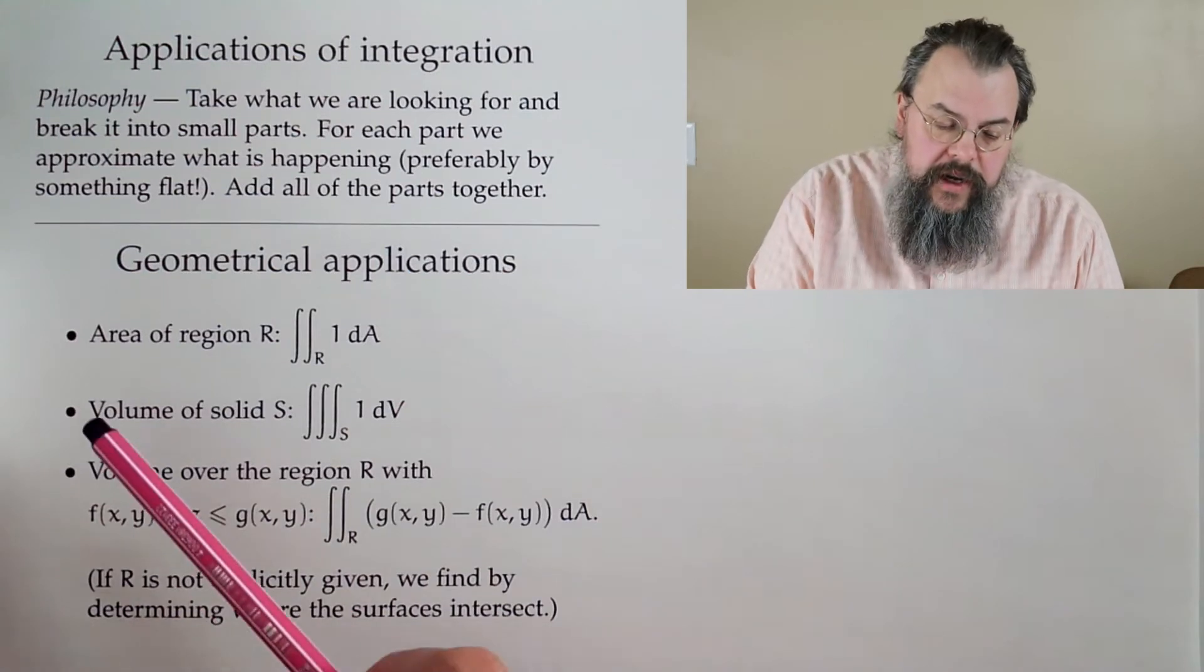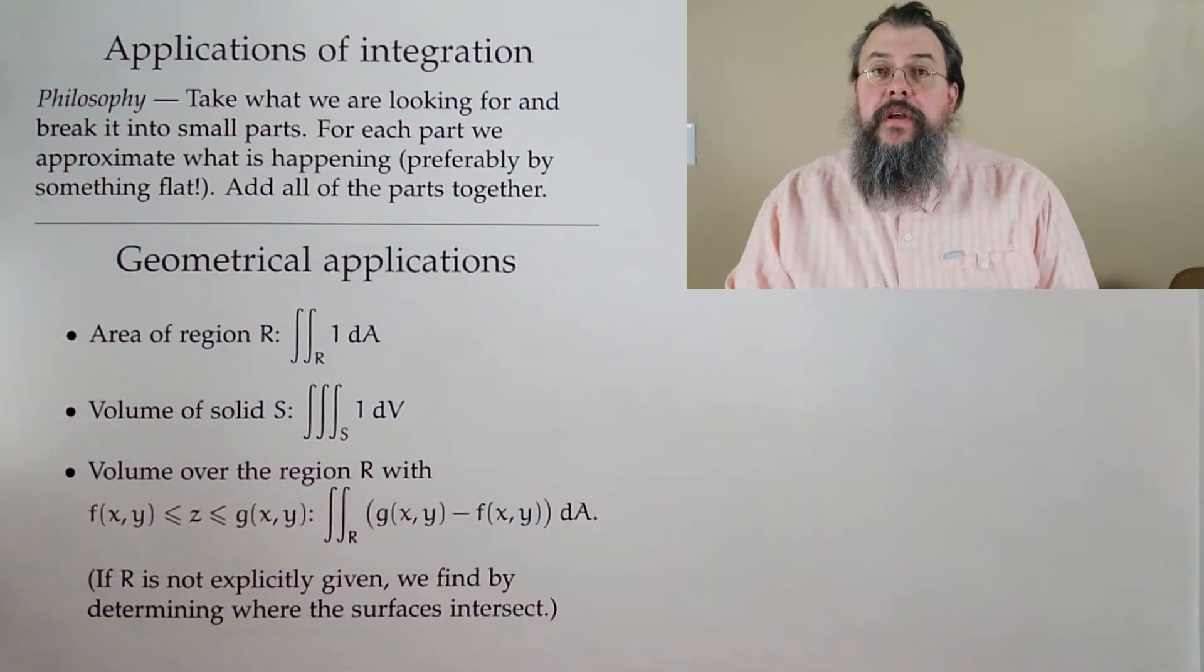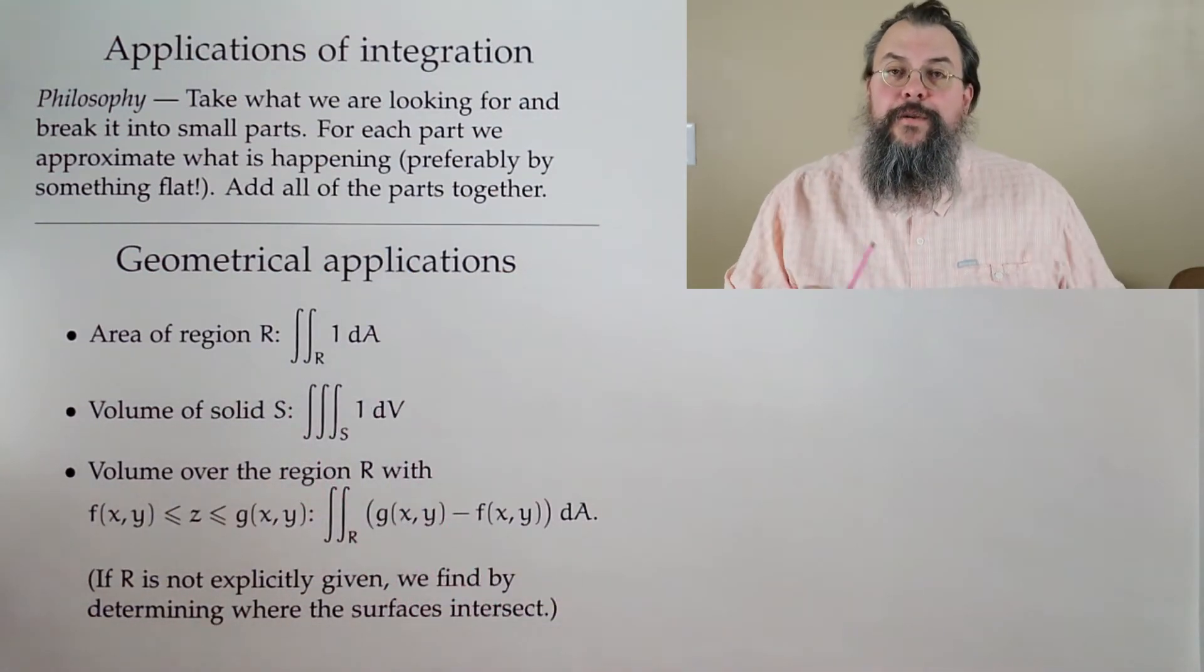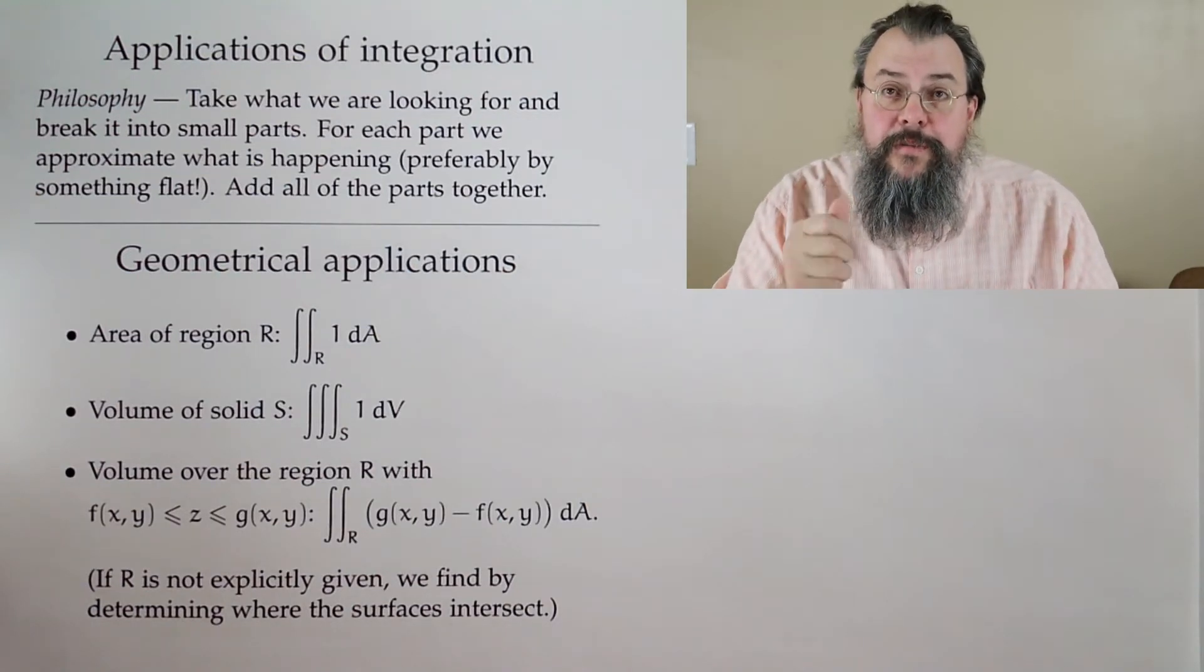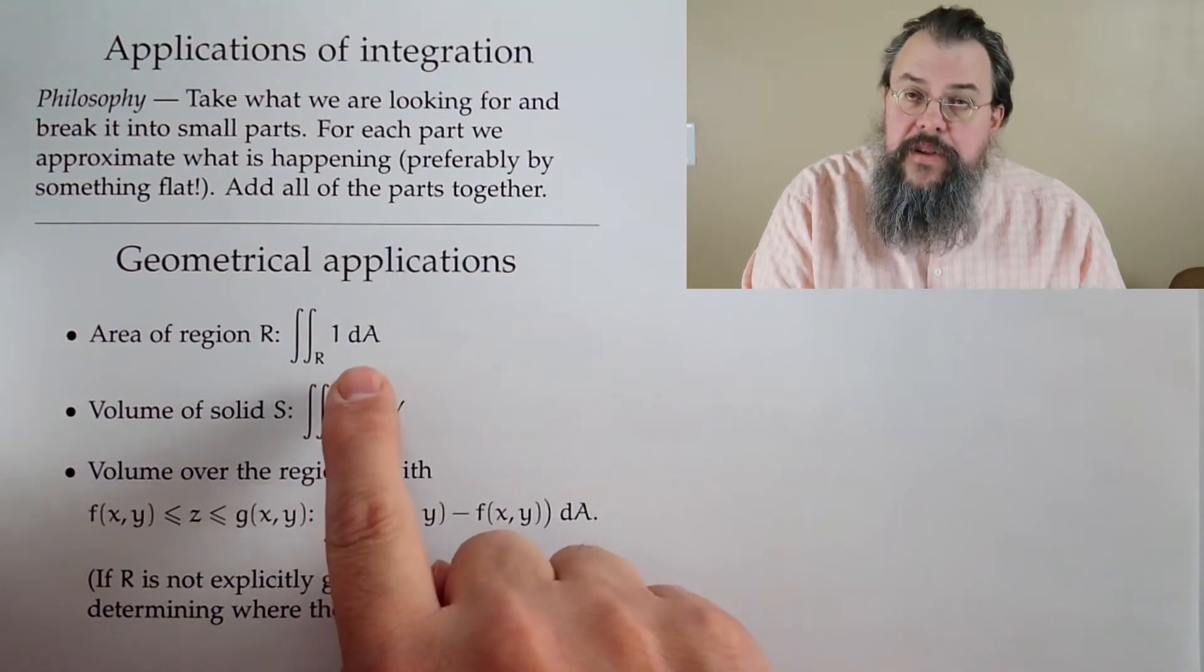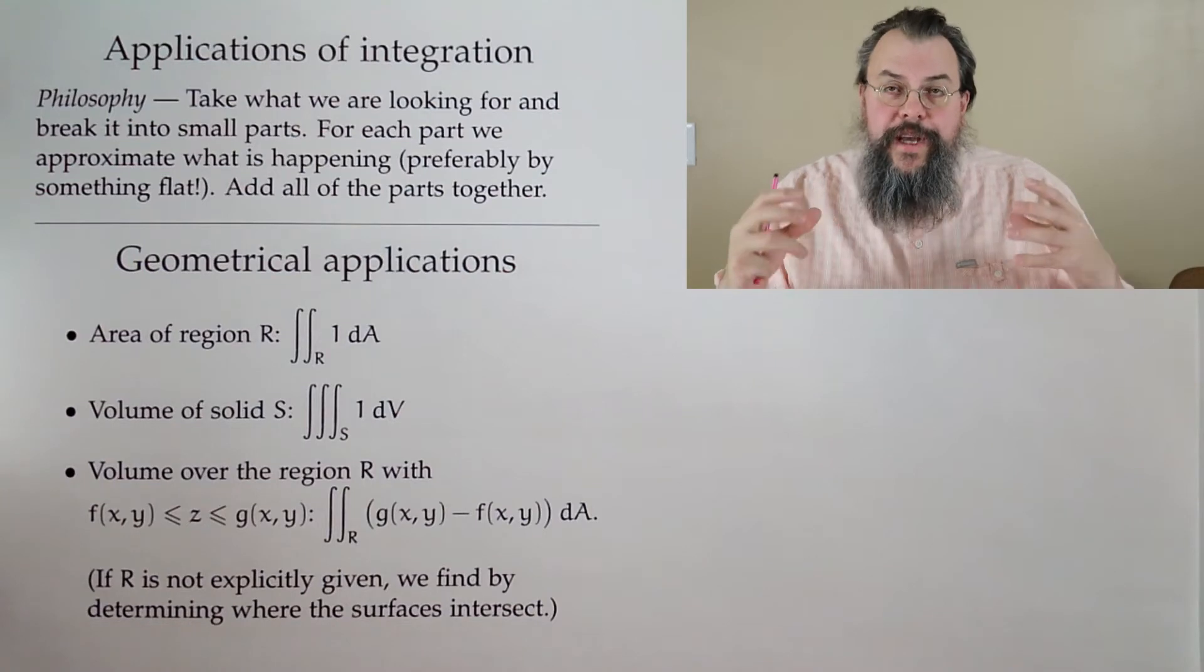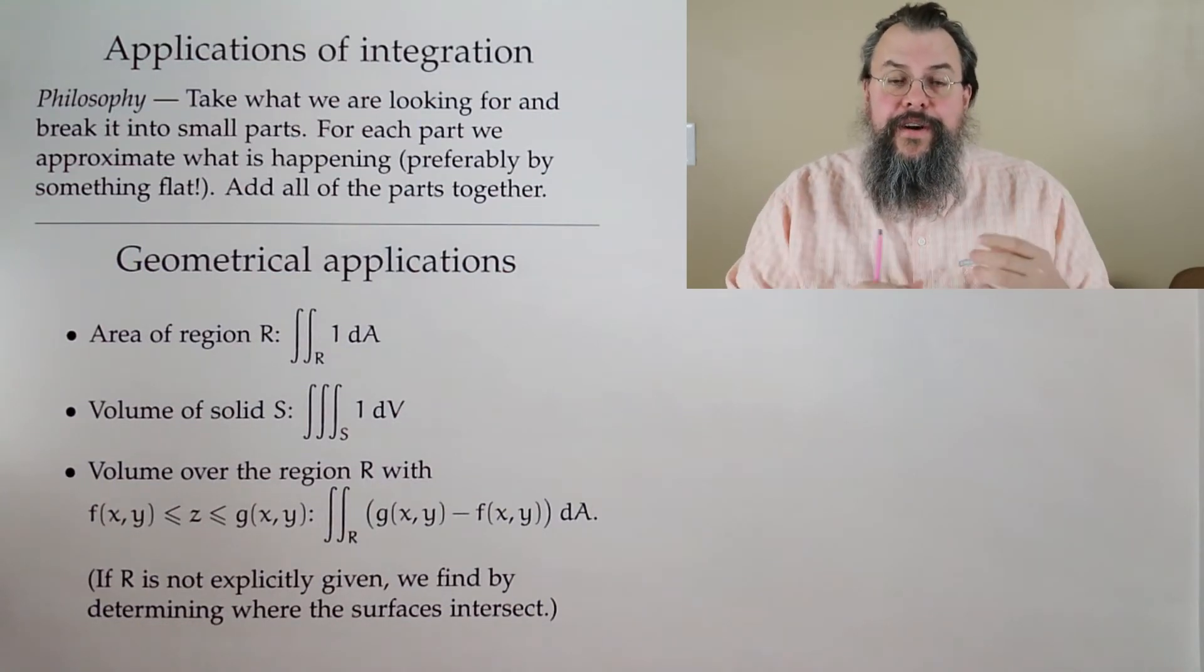We'll start with some of the classic applications of integration. What do you do? Pick what you're looking for, break into parts. Each part, we can approximate what's happening because there's a flat thing and add it up. We can find area. You integrate over your region of 1. You break things up into little parts and add up all the little areas, which gives you the total area.